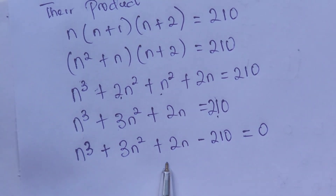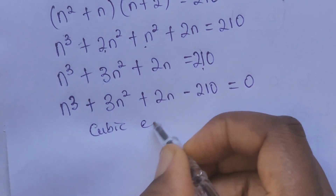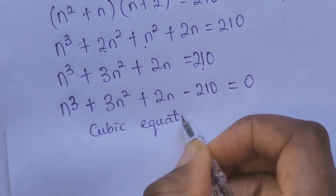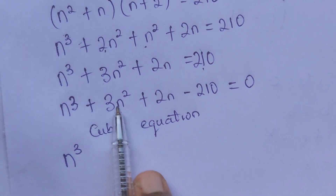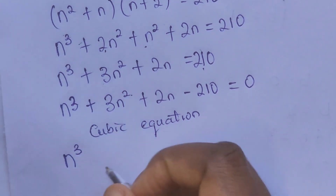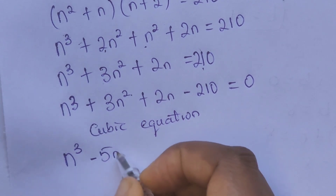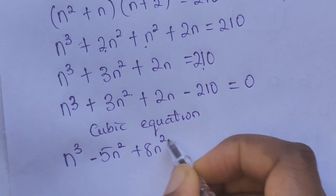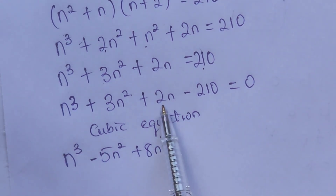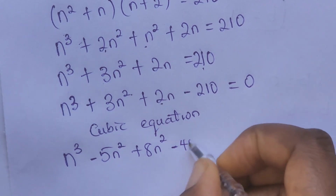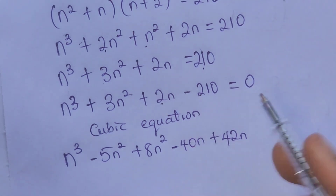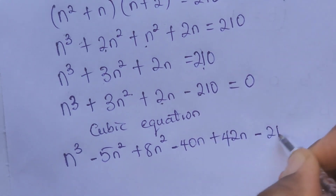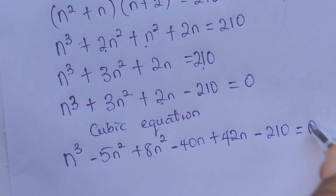We have a cubic equation to resolve. We can split 3n squared into minus 5n squared plus 8n squared, and split 2n into minus 14n plus 42n, and from here we have minus 210, all equal to zero.